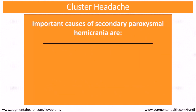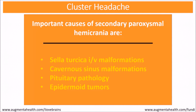Important causes for secondary paroxysmal hemicrania include arteriovenous malformations, cavernous sinus malformations, pituitary pathology, and epidermoid tumors.